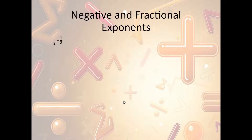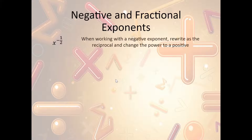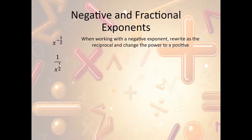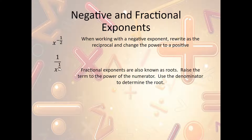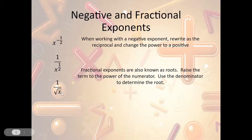What if we have a negative and fractional exponent? We do the same thing — flip it and make it positive. So x to the negative one-half becomes 1 over x to the one-half power. The one-half power means x to the first under a square root. So that becomes 1 over the square root of x.